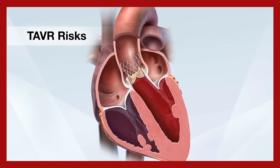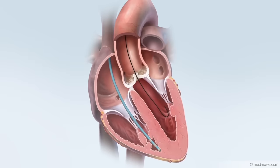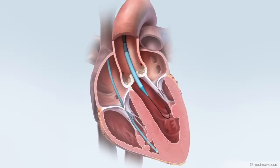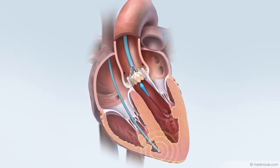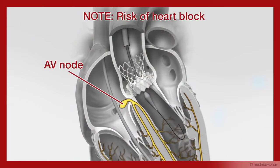Although the transcatheter aortic valve replacement, or TAVR procedure, is safe, there are some risks to be aware of. A special catheter containing a collapsed replacement valve is inserted. Note that the openings to the coronary arteries are close to this area, and blocking these openings is a risk. Once the new valve is positioned correctly, the heart is paced. Note that the heart's electrical system is close to this area, and interfering with normal beating of the heart is a risk.